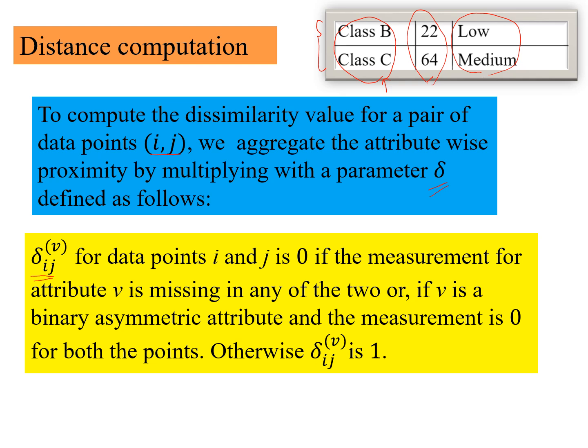Delta ij for data points i and j for the v-th attribute is 0 if the measurement for attribute v is missing in any of the two data points.